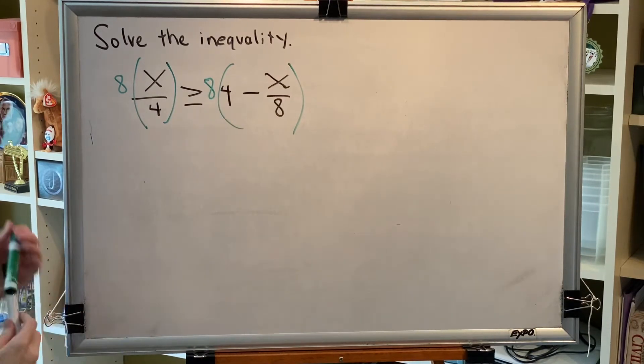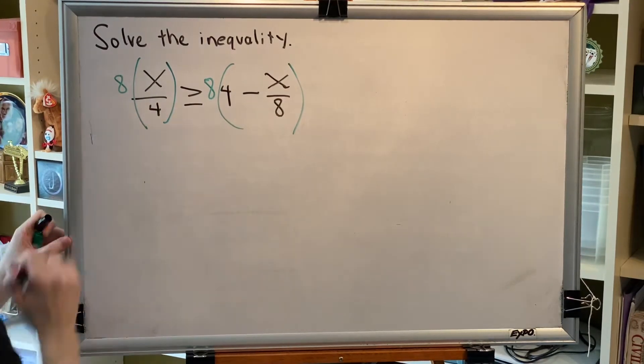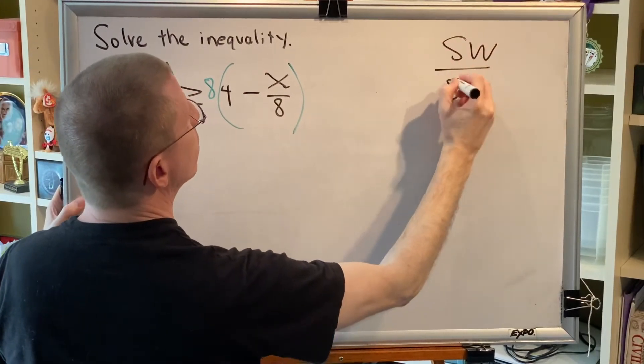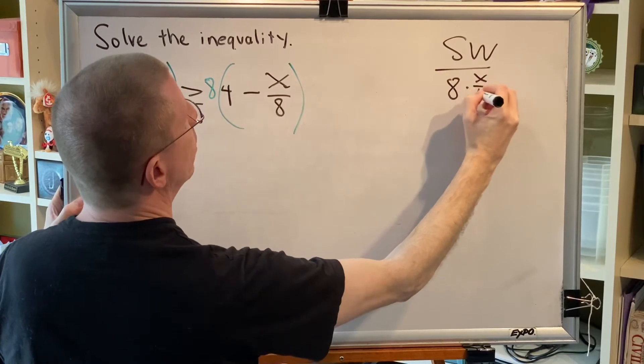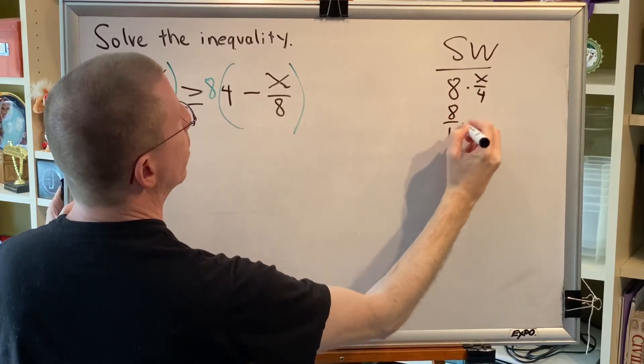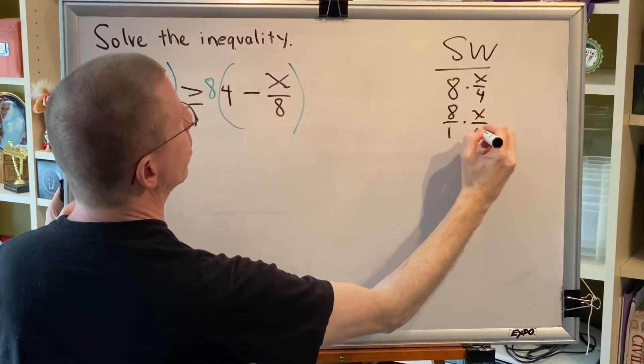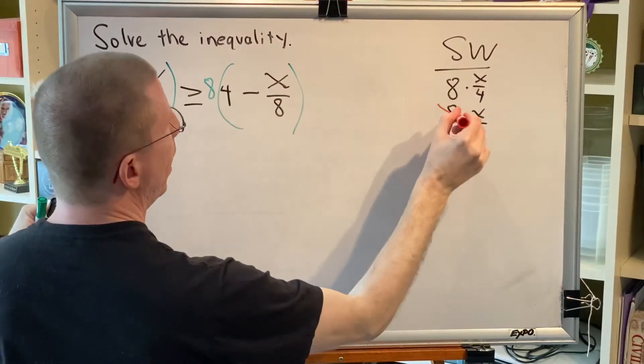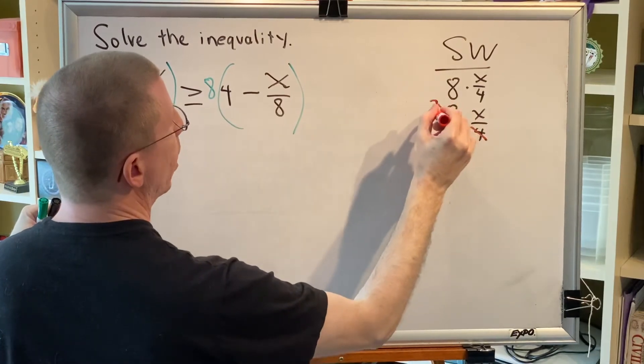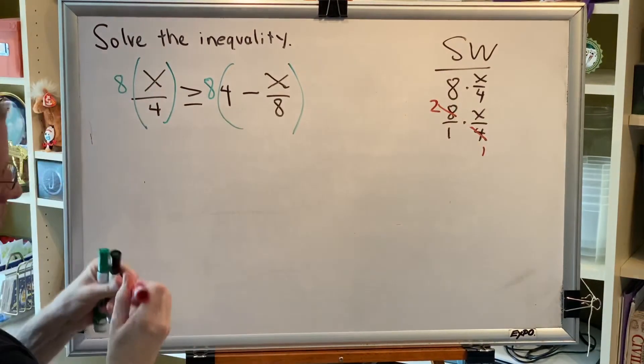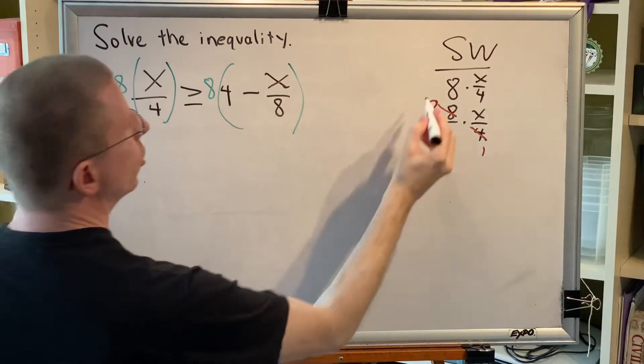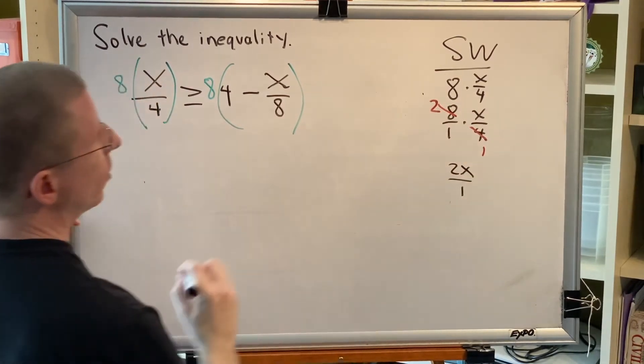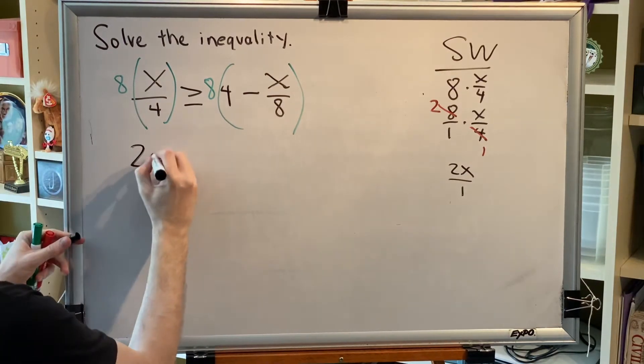So on the left side, we have 8 times x fourths. Let's do that in our side workspace. 8 times x fourths is the same thing as 8 over 1 times x fourths. We know that 8 divided by 4 is 2. So we can reduce 8 over 4 to become 2 over 1. Now multiply the fractions. 2 times x is 2x. 1 times 1 is 1. Anything divided by 1 is itself. So this is 2x.